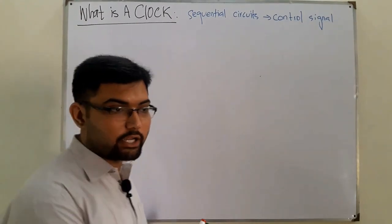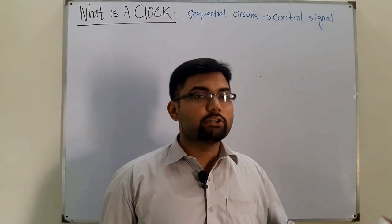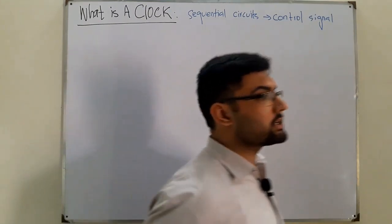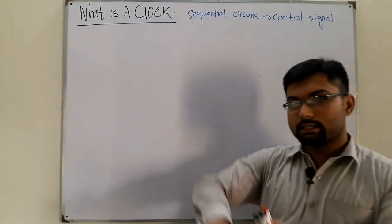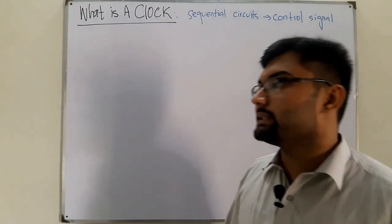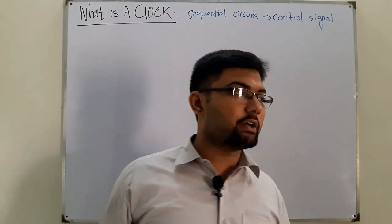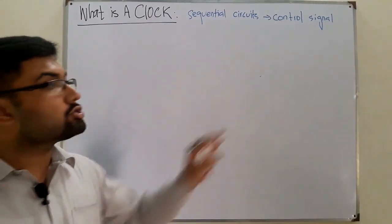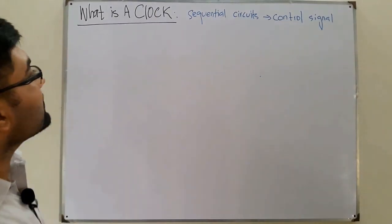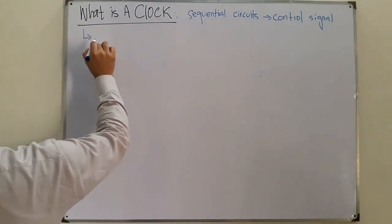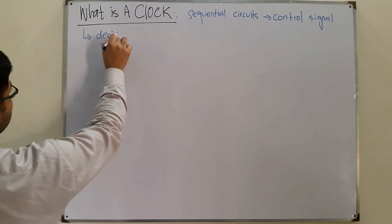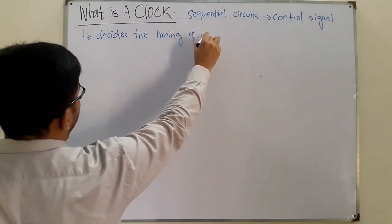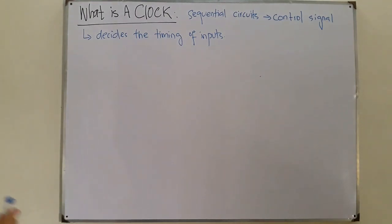I'll give you a brief idea in this video and when we move on, you'll see it in great detail. In sequential circuits, the output is again given as feedback to another input, so the output of one circuit is given as an input to another circuit and you have multiple processes going on at the same time. For that, you need to control the timings of the inputs.